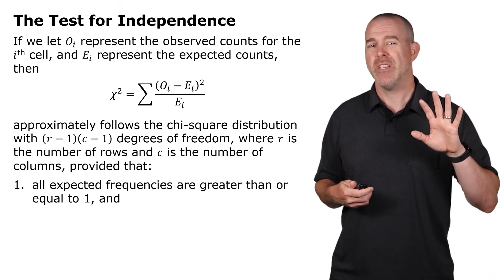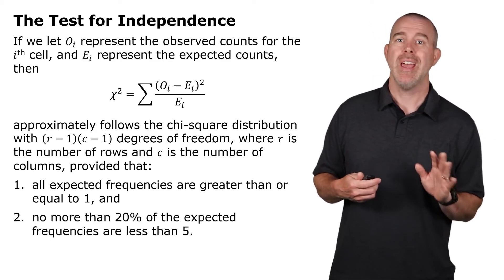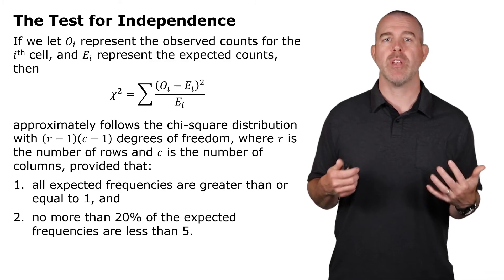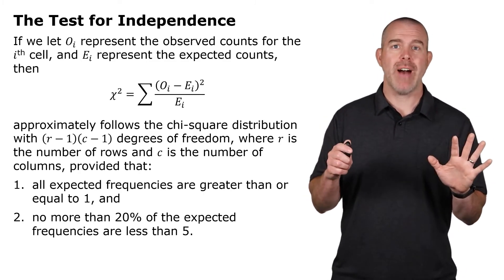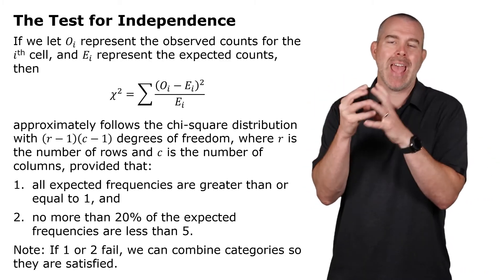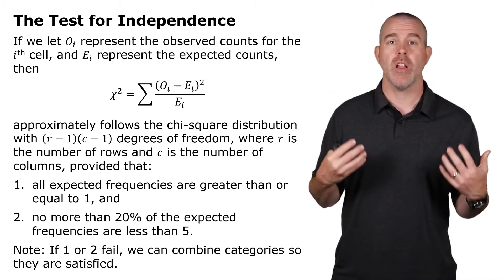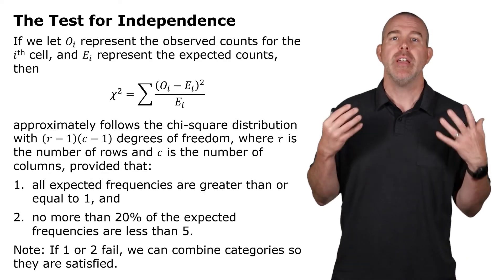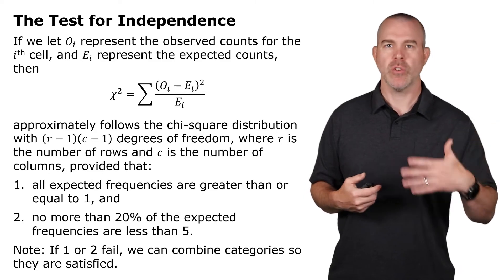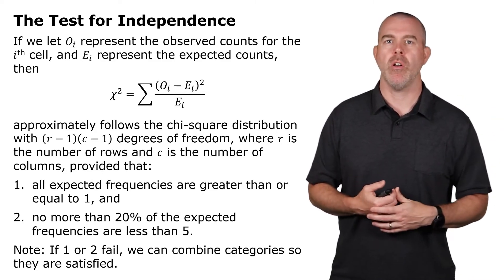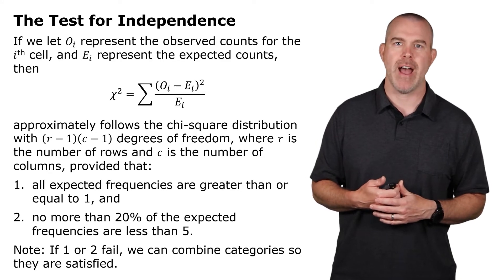There are some criteria here: all the expected frequencies have to be at least one, and you can't have more than 20% of the expected frequencies be less than five. If those are violated, you can combine categories together. That's not going to be necessary for ours because all of our expected counts were very large. But if you need to, you can combine categories to get those criteria met.